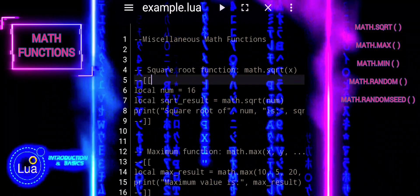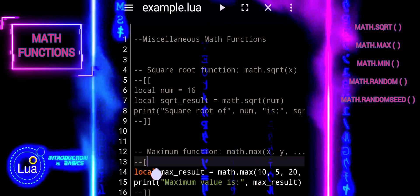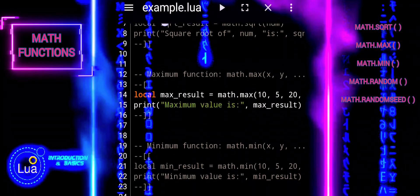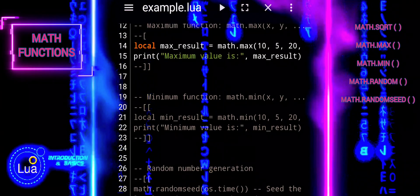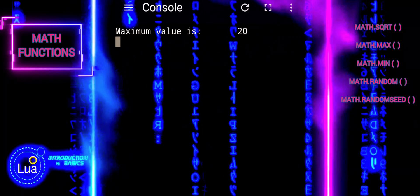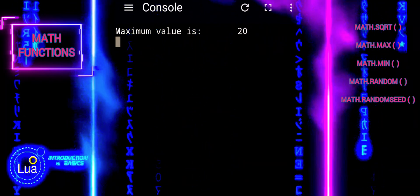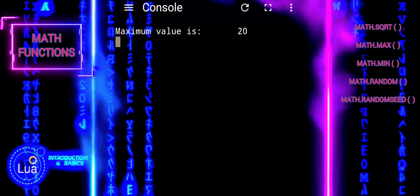The math.max function is used to determine the maximum value among a set of numbers. In this example, math.max function compares the numbers 10, 5, 20, and 15, and determines that 20 is the maximum value.